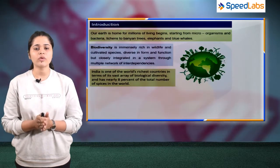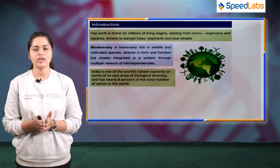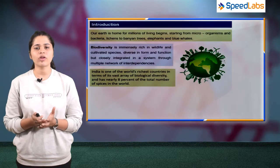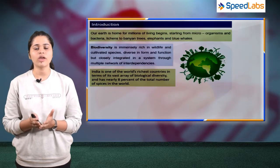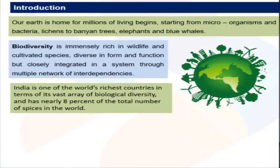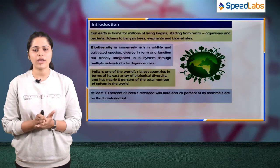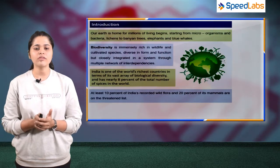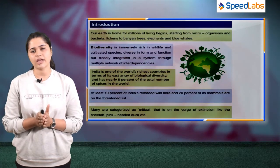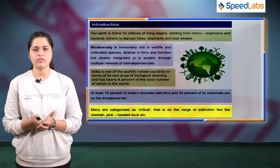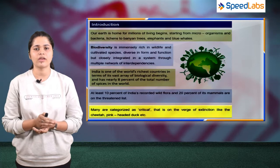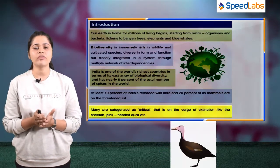India is one of the world's richest countries in terms of biological diversity, accounting for at least 8% of the total number of species in the world. However, at present almost 10% of India's recorded flora and 20% of mammals are in the threatened list, meaning they are on the verge of extinction. Examples include the cheetah and the pink-headed duck.